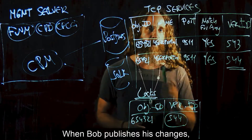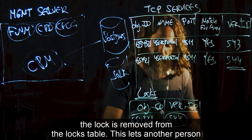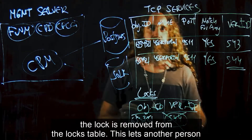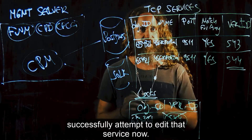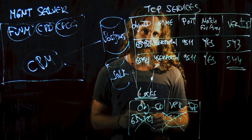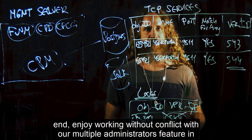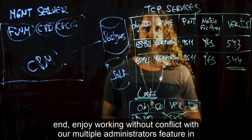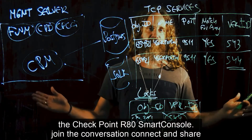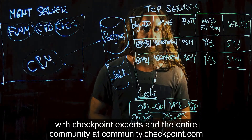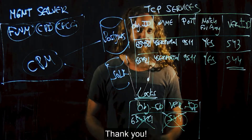When Bob publishes his changes, the lock is removed from the LOCKS table. This lets another person successfully attempt to edit that service now. Enjoy working without conflict with our multiple administrative features in the Checkpoint R80 Smart Console. Join the conversation, connect and share with Checkpoint experts and the entire community at community.checkpoint.com. Thank you.